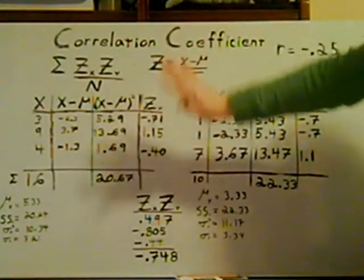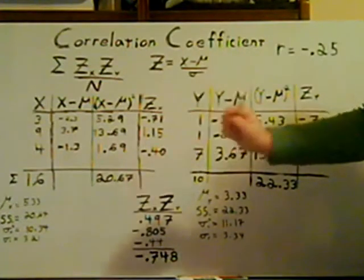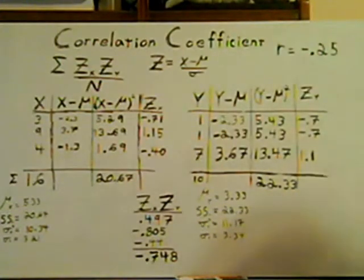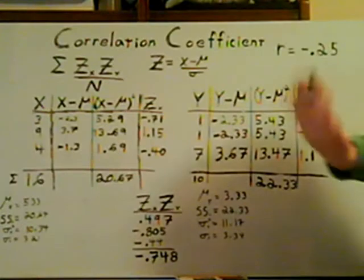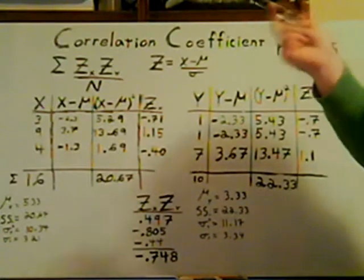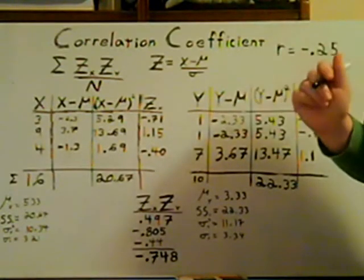I know this looks very scary, but it's very simple. A correlation really just measures a relationship between two variables.